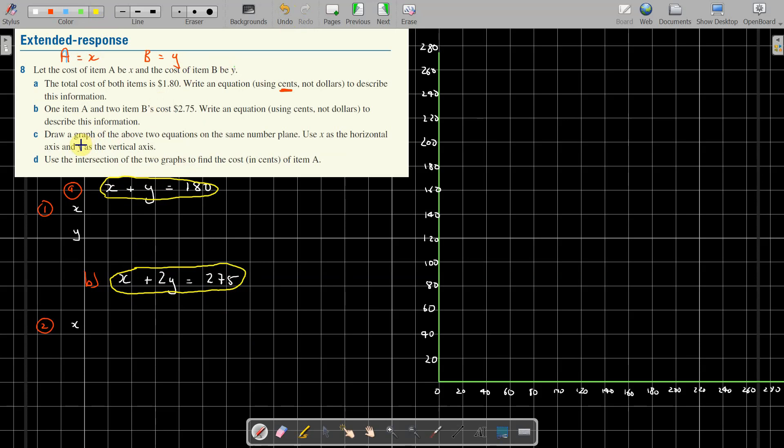Now what? Draw a graph of the two equations on the same number plane. There we are, there it is. You use X as horizontal, so down here all these values are our X, and over up here is the Y values. Okay, so we're going to do a bit of finding a table of values.